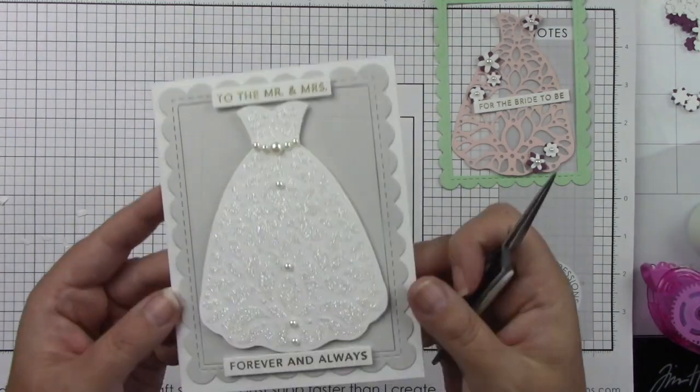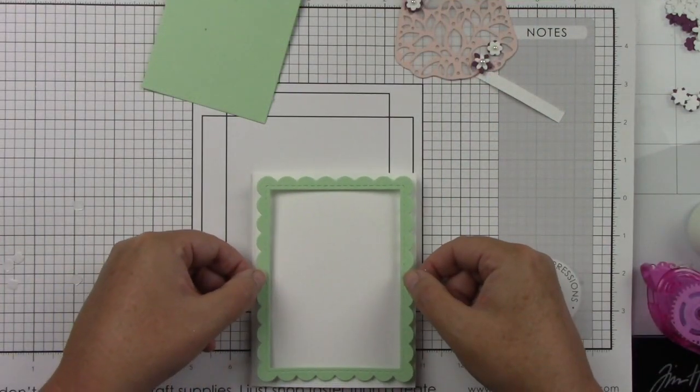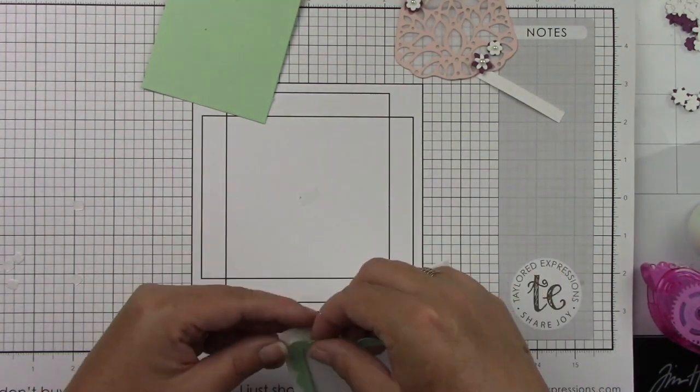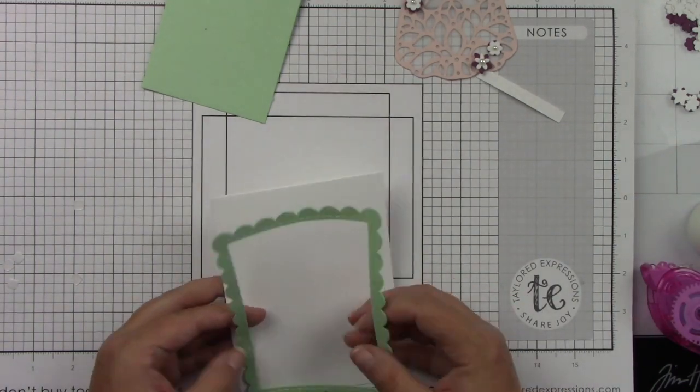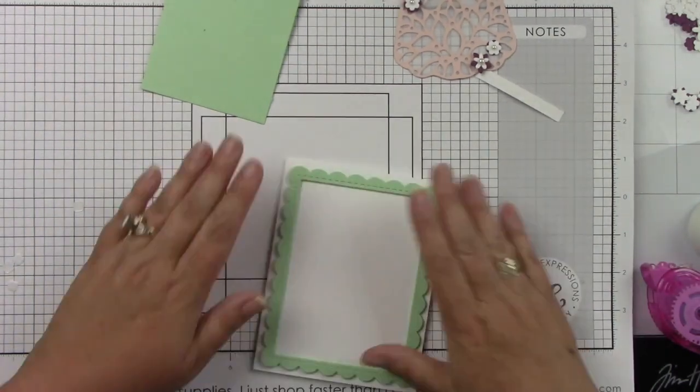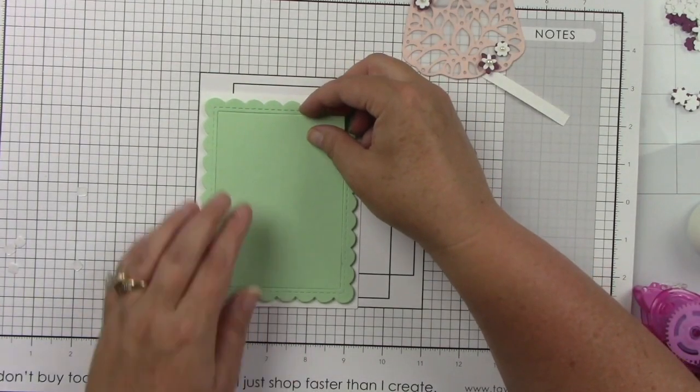Okay, for the other card, the Mint Julep frame will have some of those 3D foam squares behind it. I want that to be popped up. And then the centerpiece will not be popped up, that will just be adhered in the background.